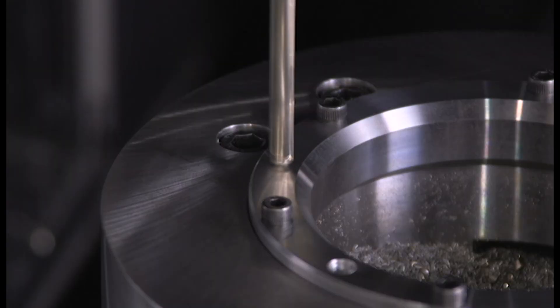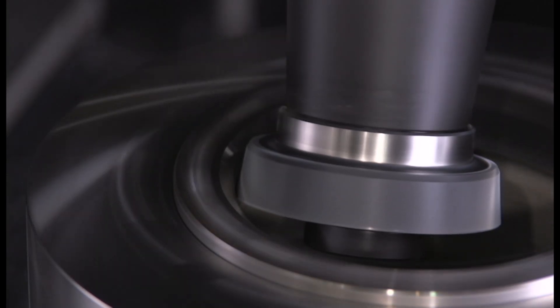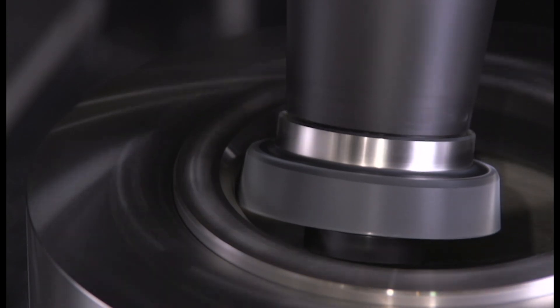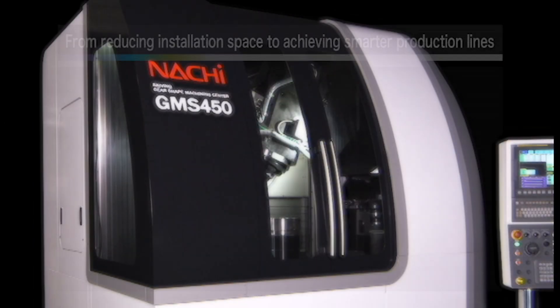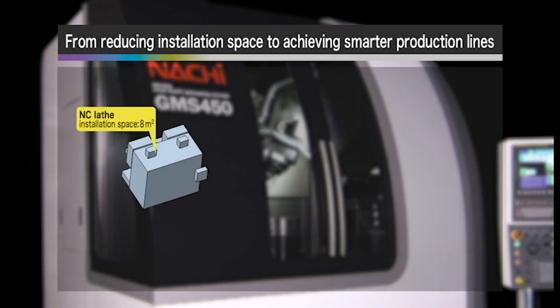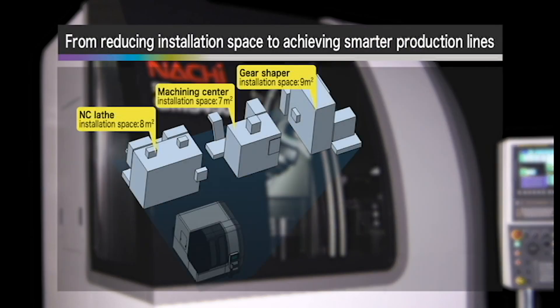It is the most compact skiving machine in its class, requiring only 80 square feet of installation space, but can handle 450 millimeter diameter workpieces. You can save incredible amounts of space compared to installing an NC lathe, machining center, and gear shaper.